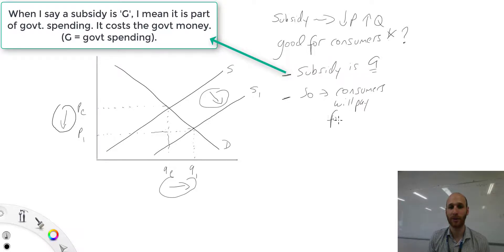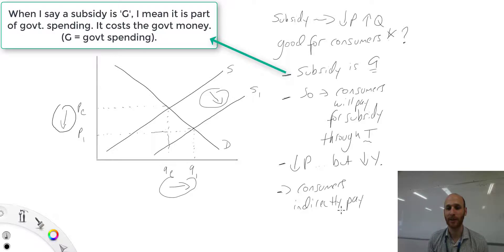So consumers will pay for the subsidy through their tax. In effect, it's kind of like saying consumers will get lower prices but it will cost them some of their income. So in that way, consumers will indirectly pay for a subsidy.